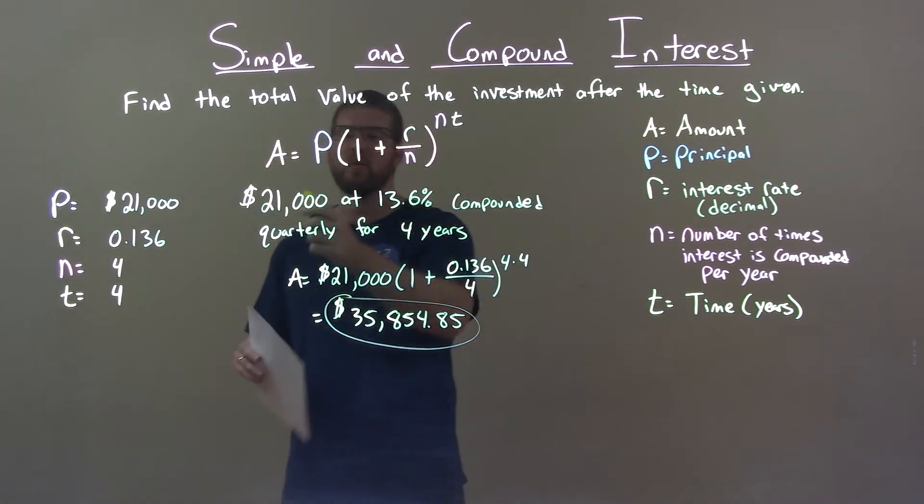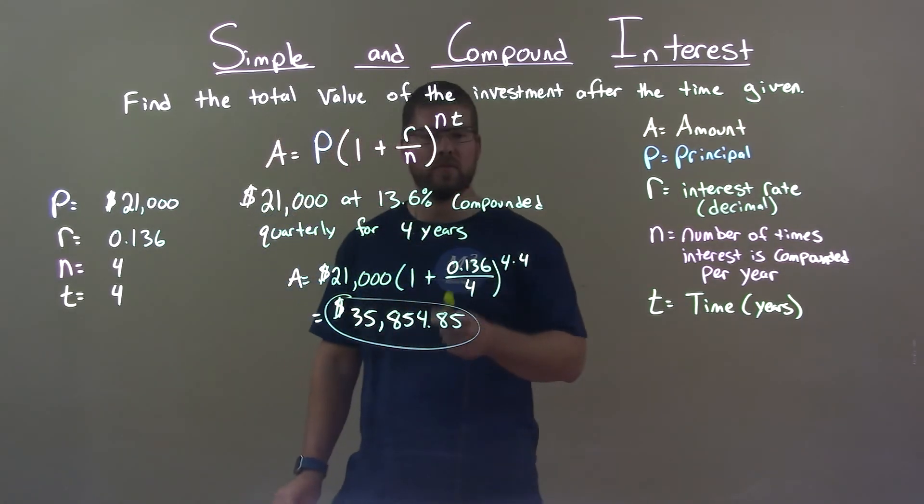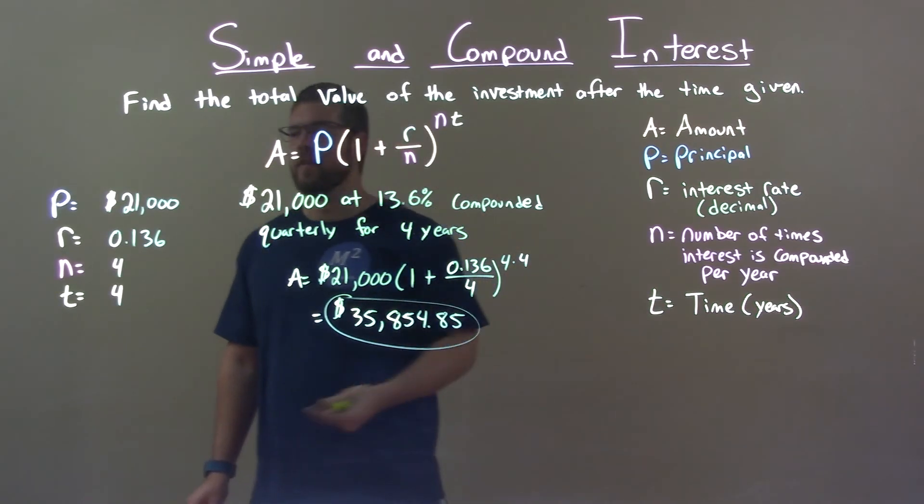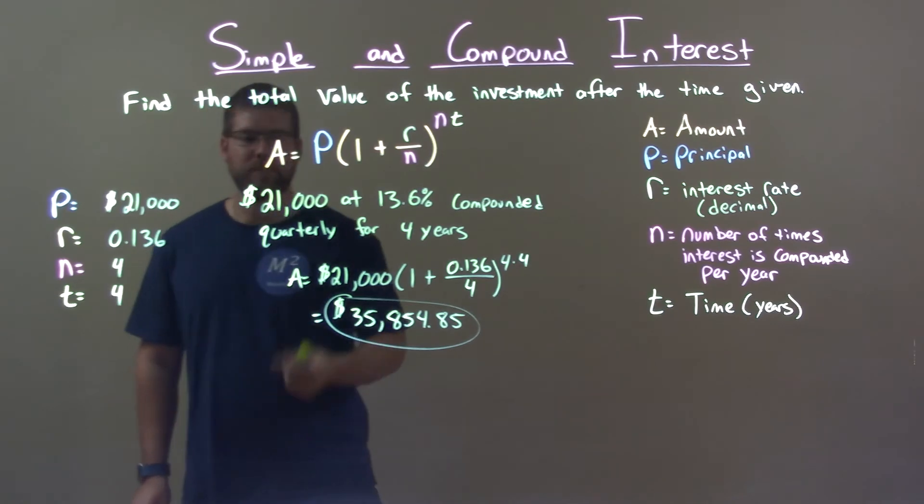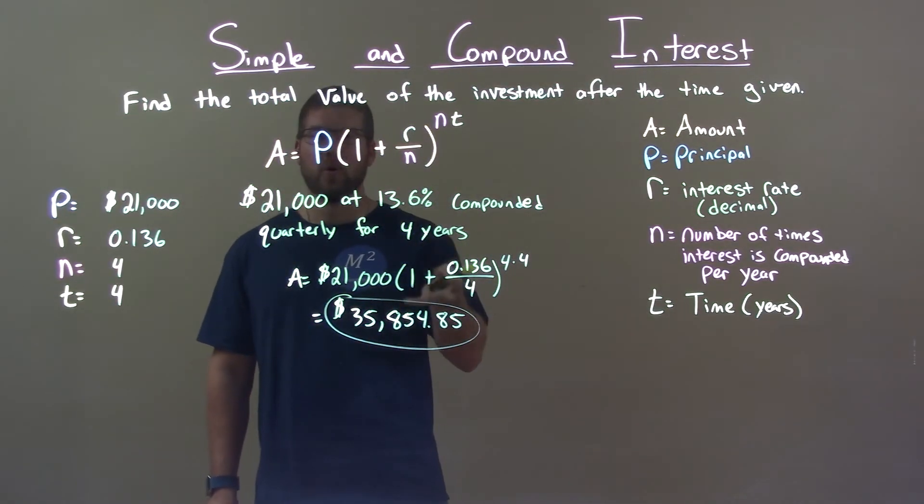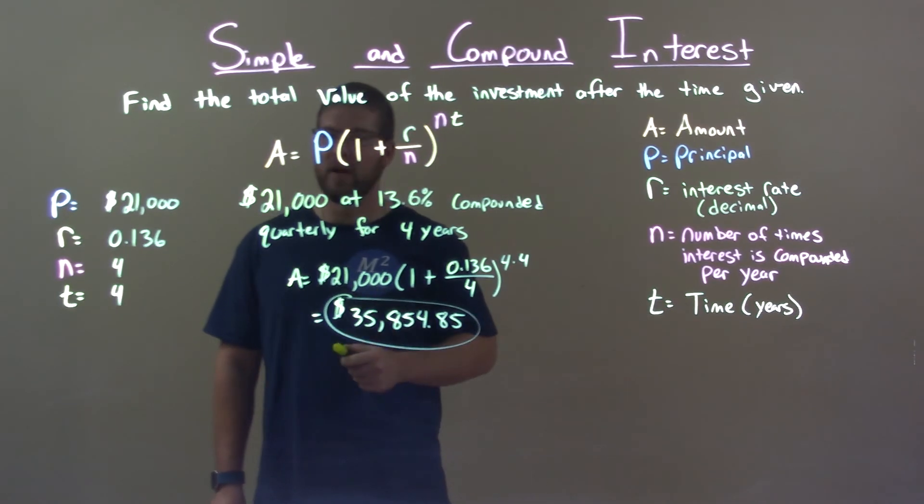Quick recap, we're given $21,000 at 13.6%, compounded quarterly for 4 years. With that information, we got the values for P, R, N, and T. We applied that to our compound interest formula and solved, and we got a total value of our investment to be $35,254.85.